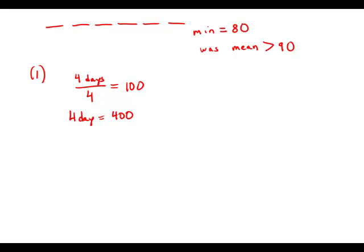So suppose those four big days add up to 400, and then we have two minimum days of 80. Well then that adds up to 560, and if we divide 560 by 6, we know that 6 goes into 540 90 times, so this is going to be something greater than 90.